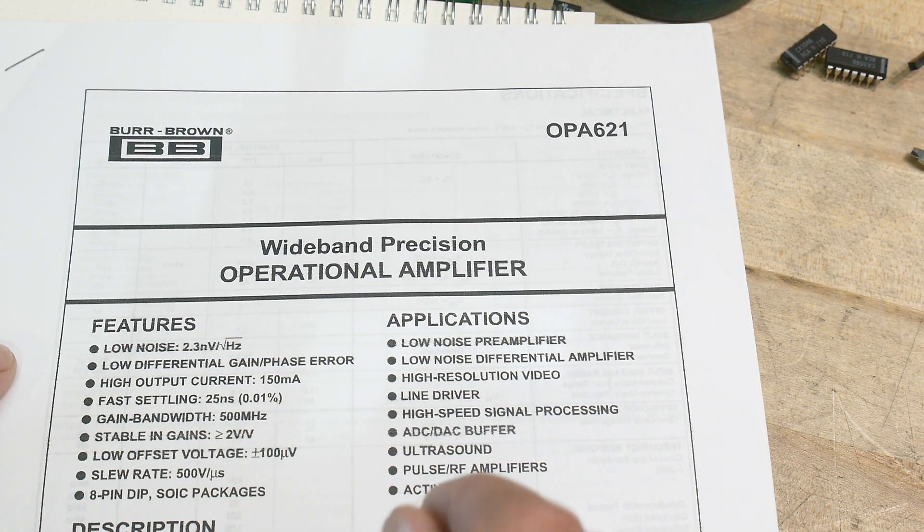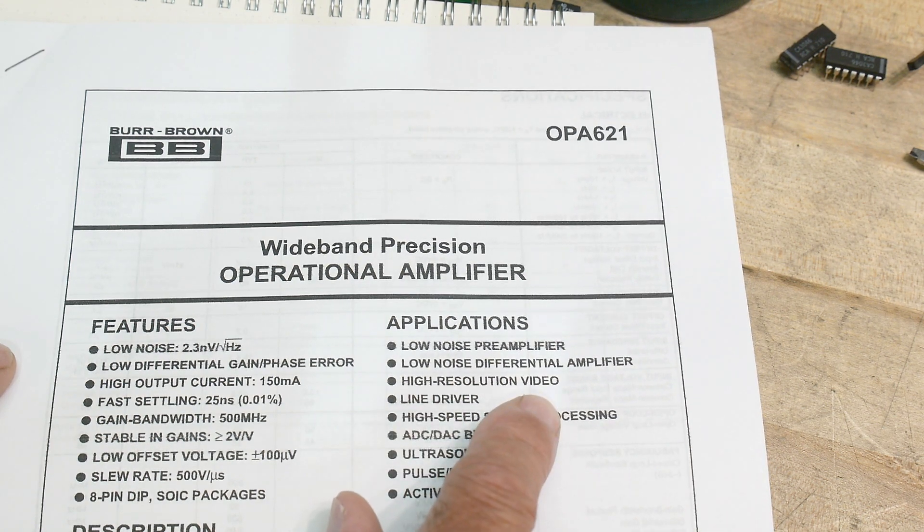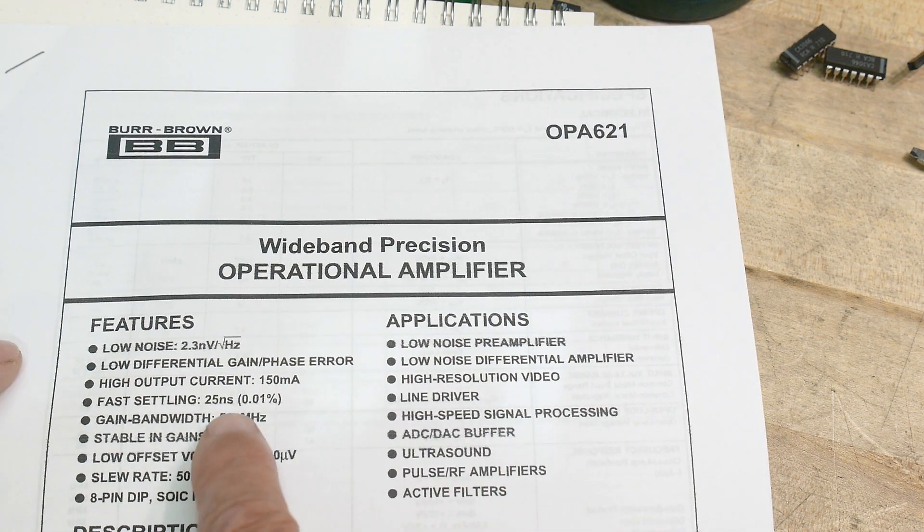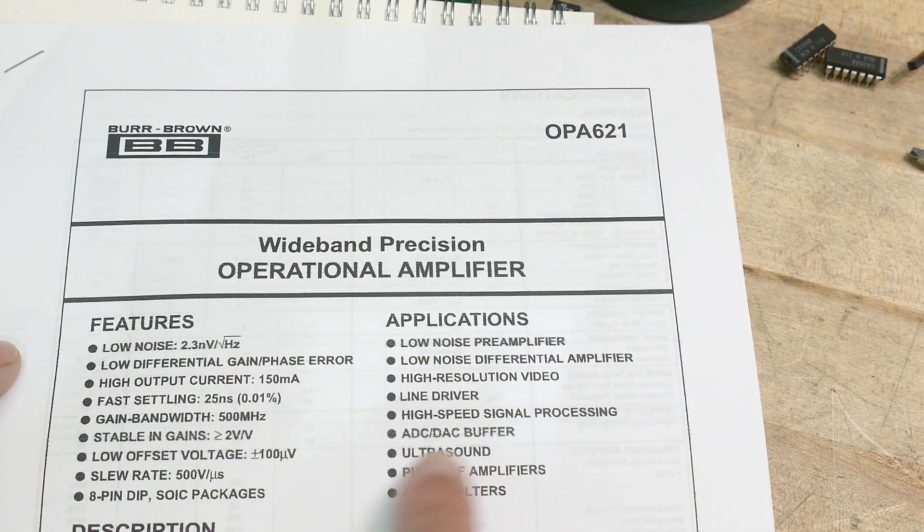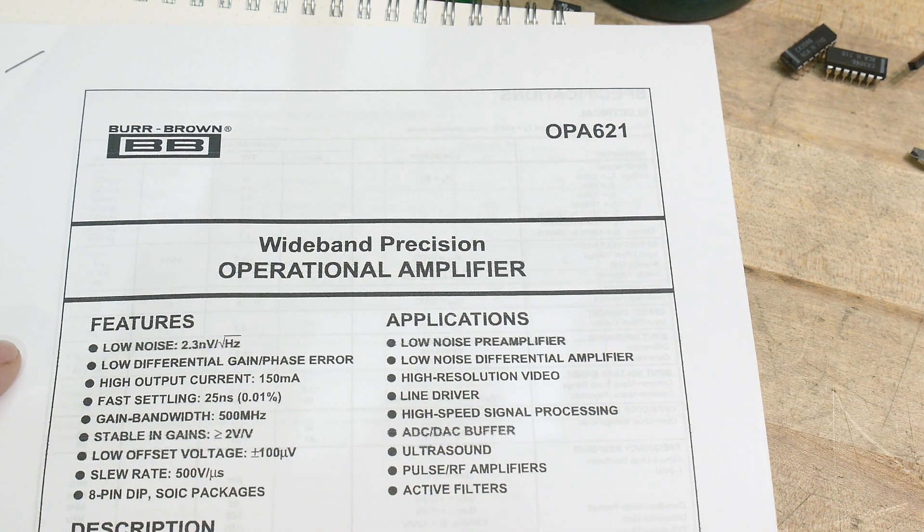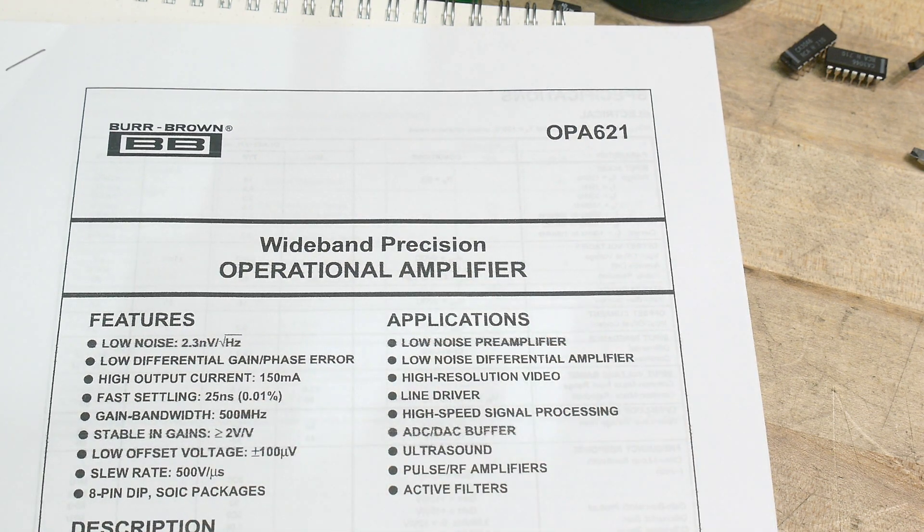I've got a bunch of these in the drawer. Applications include low noise amp, high resolution video, line driver, buffers, and active filters. This thing's great. Because it's so fast, we can use this in ham radio applications.